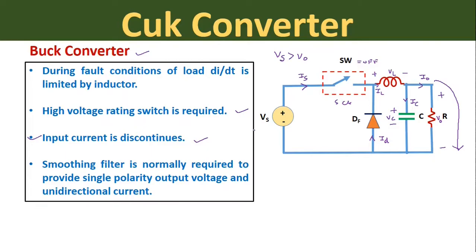Fourth point: a smoothing filter is normally required to provide single polarity output voltage and unidirectional current. In case the input DC signal is produced by a rectifier, there are harmonics in the DC signal. If there is no smoothing filter on the input side, these harmonics will be introduced in the supply line. To reduce this, we use an LC smoothing filter between the SW switch and the DC voltage source, which provides single polarity output voltage and unidirectional current.